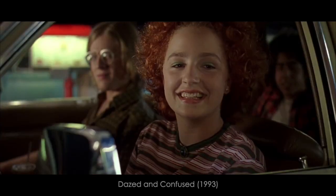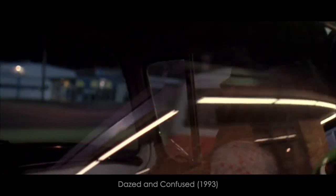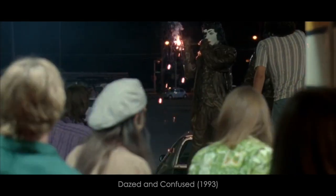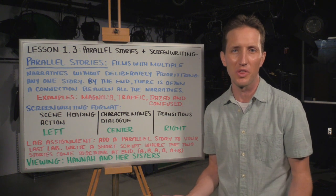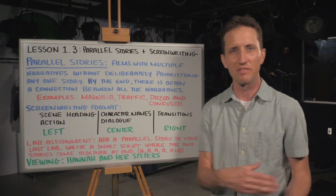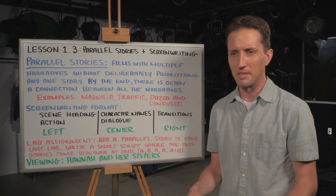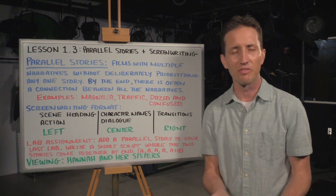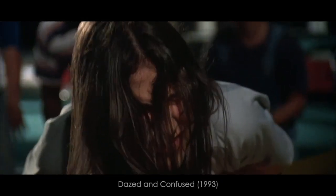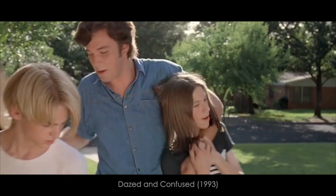Let's talk about Dazed and Confused. It's the last day of school, and all of these different students — not just at the high school, but at the middle school — are sort of transitioning from one year to the next. We meet Randall Pink Floyd, who most people would say is the main character, but we spend about as much time with him as any of the other characters. He's sort of the everyman who weaves in and out of all these different stories, friendly with everybody. His coaches want him to sign a loyalty contract, and he doesn't want to do it — that's his big problem throughout the film. We've got the jocks terrorizing the incoming freshmen, Darla the cheerleader terrorizing the incoming freshmen, and O'Banion terrorizing freshmen — and we see what ultimately happens to that guy.